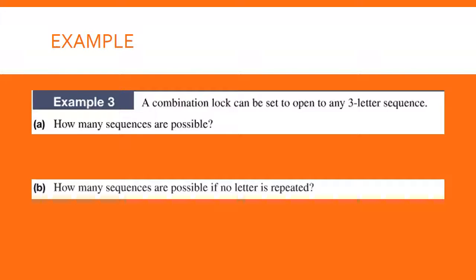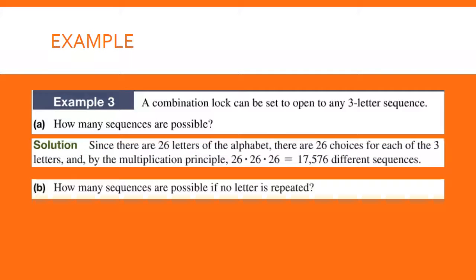Let's try this example — pause the recording, give it a try, and resume to check your answer. A combination lock is set to open with any three-letter sequence. How many sequences are possible? Well, there are 26 letters in the alphabet, so you have 26 choices for each of the three letters. So 26 times 26 times 26 is 17,576 different sequences.